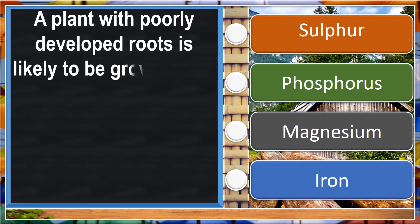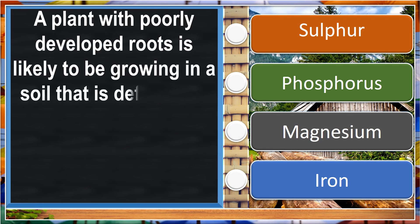A plant with poorly developed roots is likely to be growing in a soil that is deficient in phosphorus.